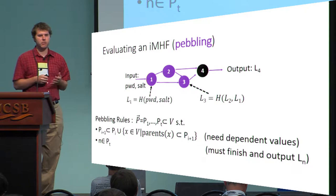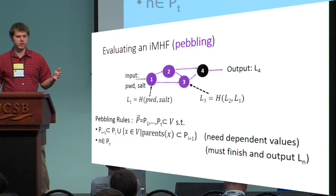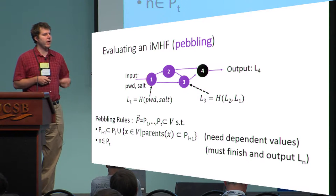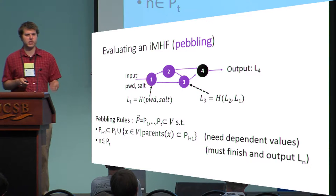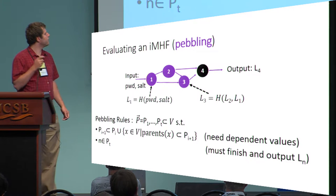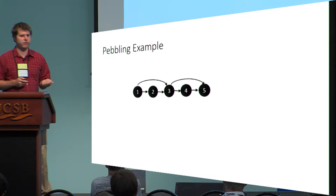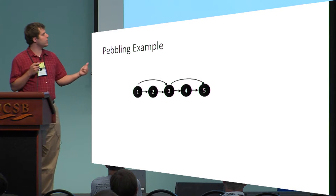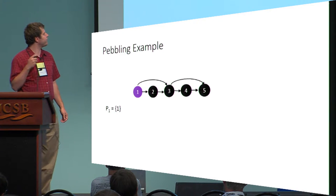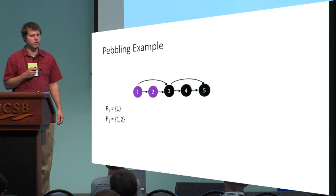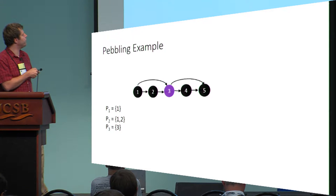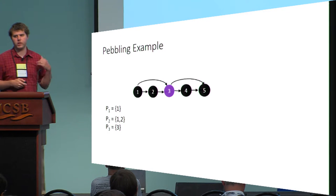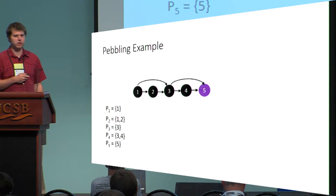The adversary is allowed to place potentially multiple pebbles on the graph during a given round — we assume the adversary is parallel. The adversary is also allowed to discard pebbles at any point in time, potentially to save space. Here's a simple example of pebbling: we place a pebble on node 1, then node 2, then pebble node 3 because we had pebbles on the parents. At the same time, we can remove pebbles from nodes 1 and 2 because they're no longer needed. Now we can pebble node 4, and finally node 5.